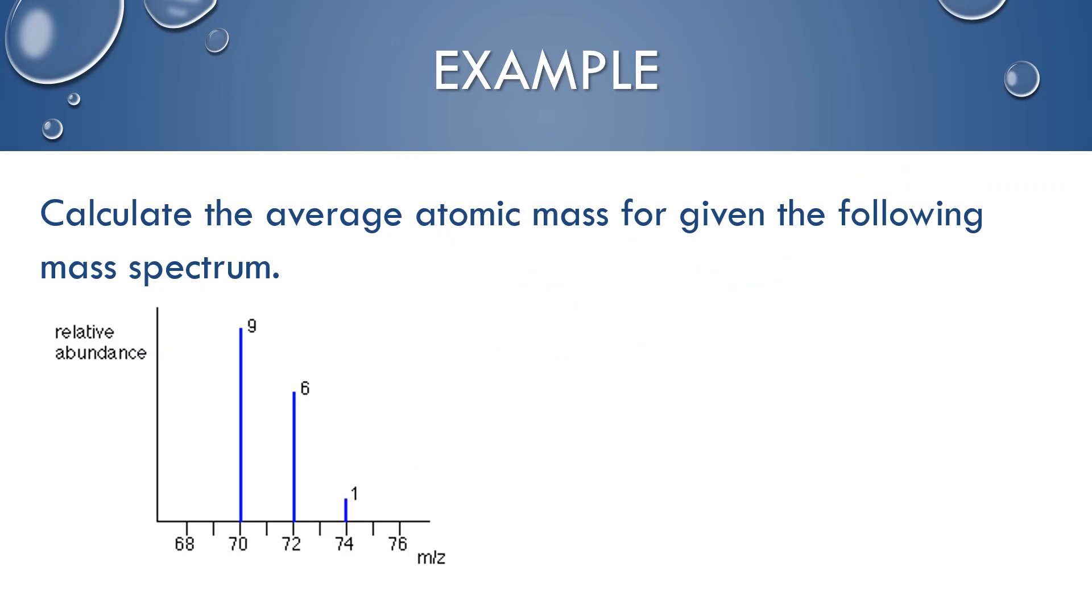Let's do one more example. Let's assume that this is a single element. First thing you want to do is add up the relative abundances. In this case, 9 plus 1 plus 6 is 16. So 9/16 has a mass of 70, 6/16 have a mass of 72, and just 1/16 has a mass of 74.